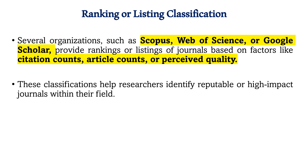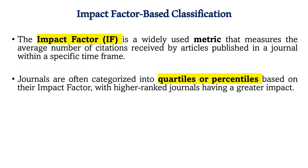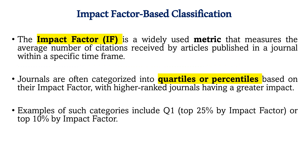So journals can be classified in these different databases — Scopus, Web of Science, or Google Scholar — on the basis of citation counts, h-index, article counts, CiteScore, and Impact Factor. These classifications help researchers and scholars in the selection of suitable journals for their papers or manuscripts. Journals are normally categorized into quartiles or percentiles. If you go to the Scopus or Web of Science website, you can see journals falling into Q1 to Q4 categories, with Q1 being the top 25% based on Impact Factor or CiteScore.